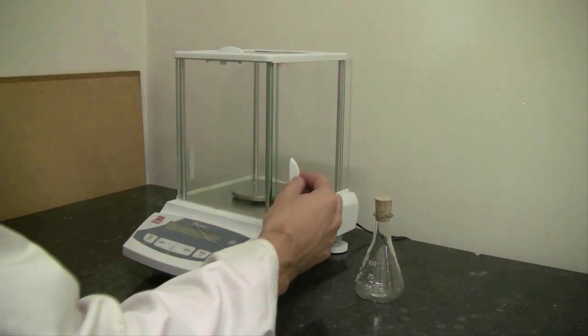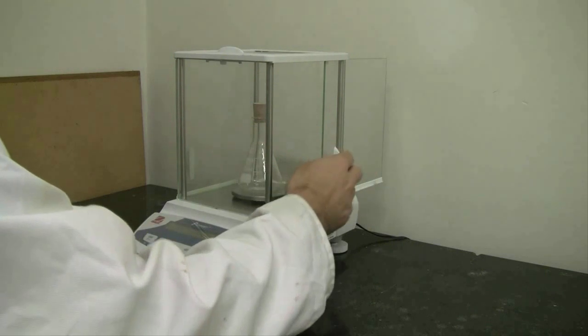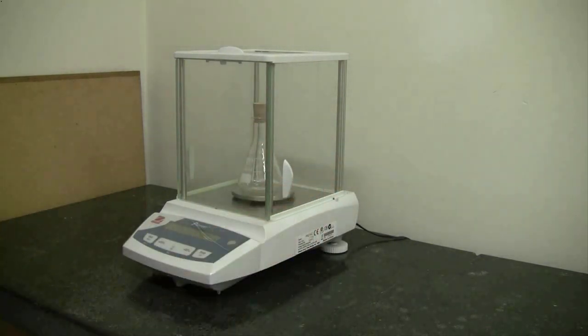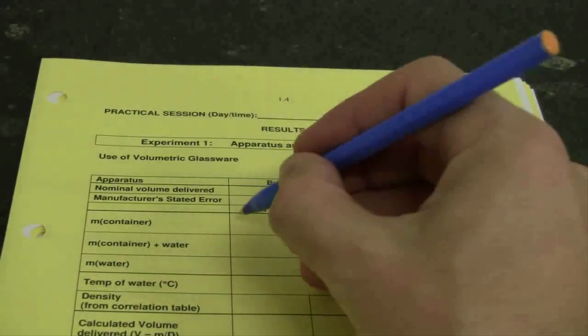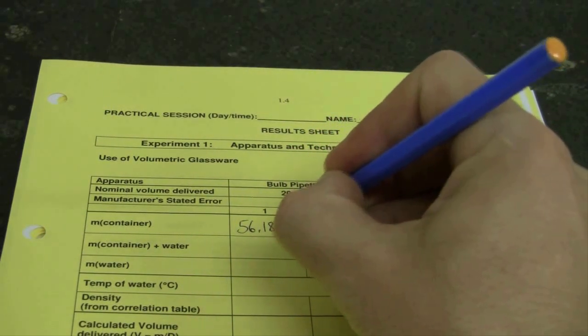Start by taking a 100 mL conical flask, taking it into the analytical balance room and accurately weighing it on an analytical balance. Make sure you record all four decimal places for your mass and when you take that reading make sure all of the balance doors are completely shut.